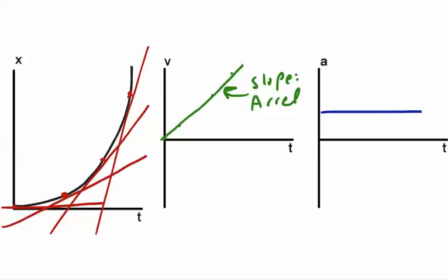So for this upward-opening parabola on the position-time graph, it starts with a slope of zero, then the tangent line gets a little more positive, a little more positive. Our velocity starts at zero and increases. Looking at that linear velocity graph, the constant positive slope tells us we have a positive constant acceleration.